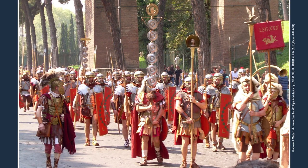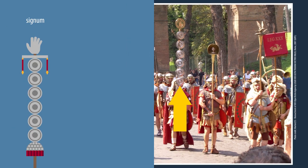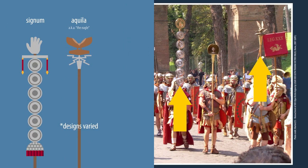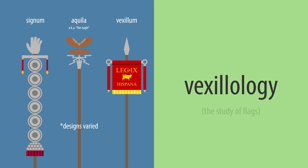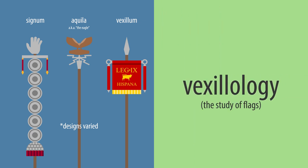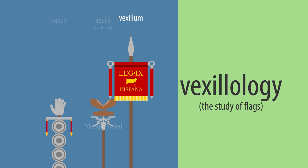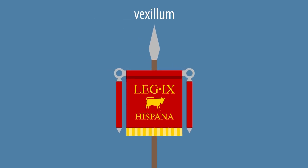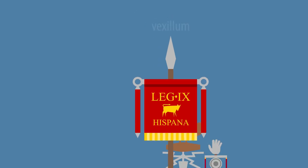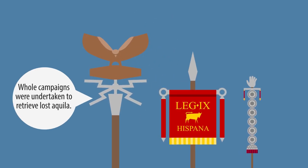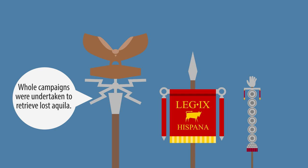Roman armies had various standards, such as the signum, the aquila, and the vexillum — which is where we got the word vexillology from, the study of flags. The vexillum was a square piece of woven fabric hanging from a crossbar carried on a pole. The loss of any standard was considered an embarrassment, the aquila especially.